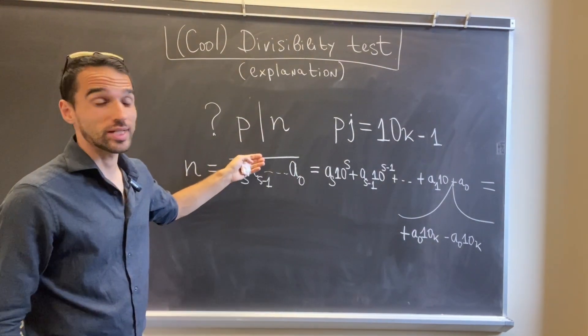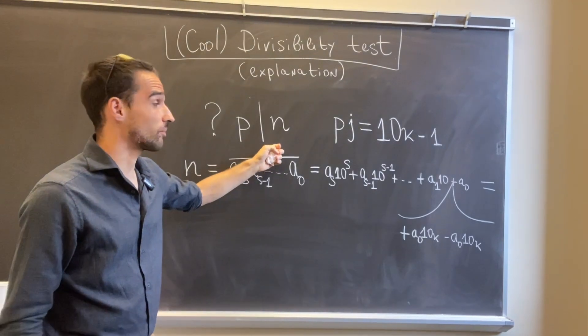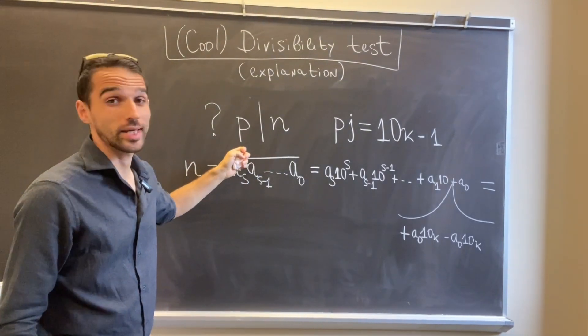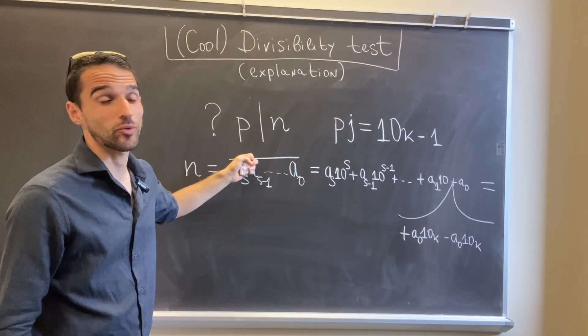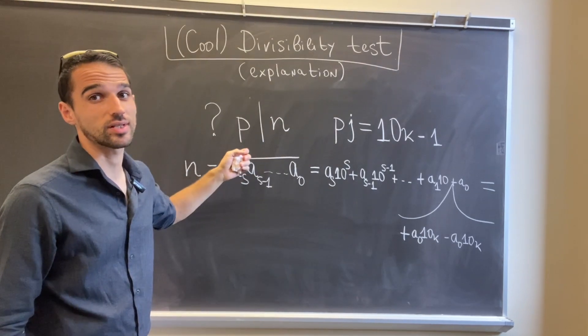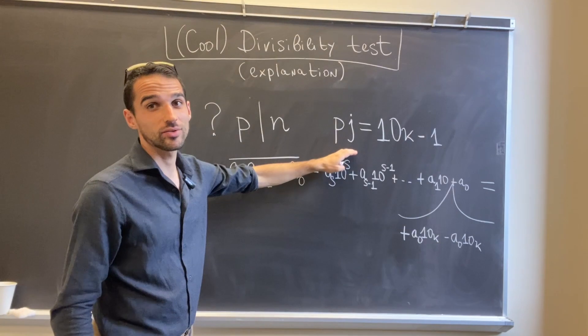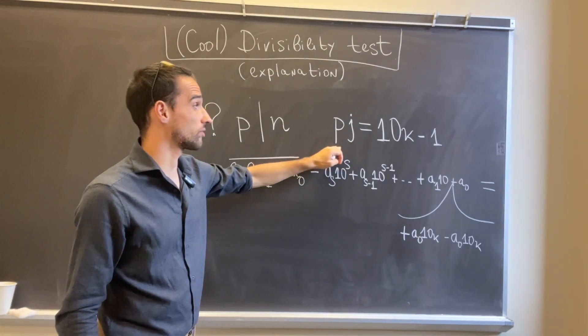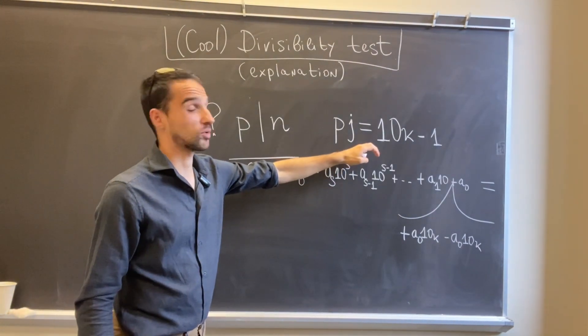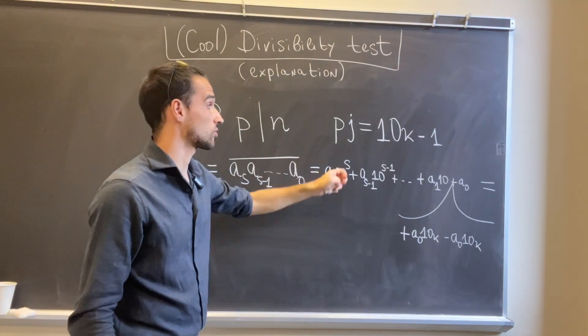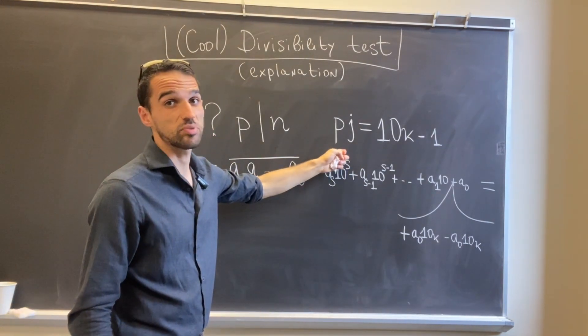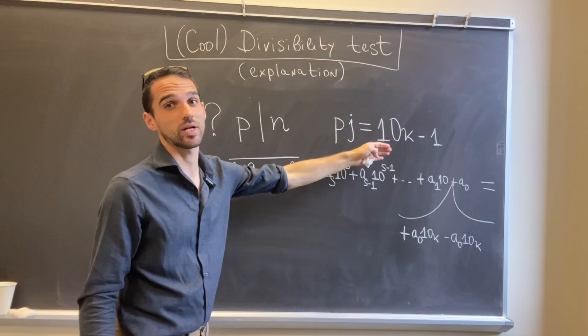Let's say that we want to test whether a number p divides some other number n. So again, p is not necessarily a prime number, it's just a number relatively prime with 10. Let's say we found the least multiple of our number p that is multiple of 10 plus or minus 1. So let's say that for instance p times j is 10k minus 1.